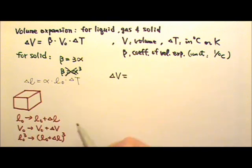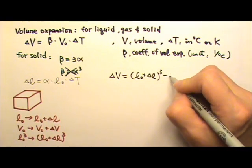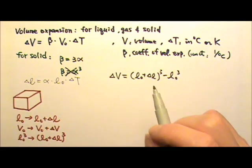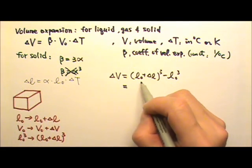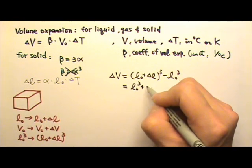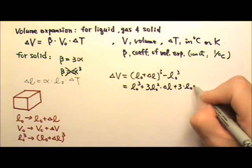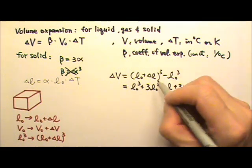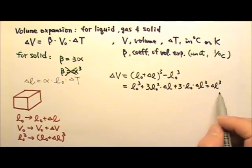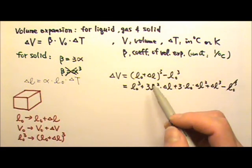The final volume is the new length cubed. We can get delta V — the change in volume — as the final volume minus the initial volume, which is the new length cubed minus the old length cubed: (L0 + delta L)³ minus L0³. Using the algebraic expansion, x plus y cubed gives x³ plus 3x²y plus 3xy² plus y³. Applying this and subtracting L0³, the L0³ terms cancel.